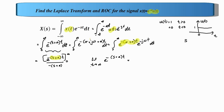If we apply the limit t equal to infinity, we get two cases. Case 1: if s plus a is greater than 0, the term is positive, so minus times a positive gives minus infinity in the exponent, making e raised to minus infinity equal to 1 over e raised to infinity, which is approximately 0. The condition reduces to: the real part of s plus a greater than 0, which means sigma plus a greater than 0, or sigma greater than minus a.